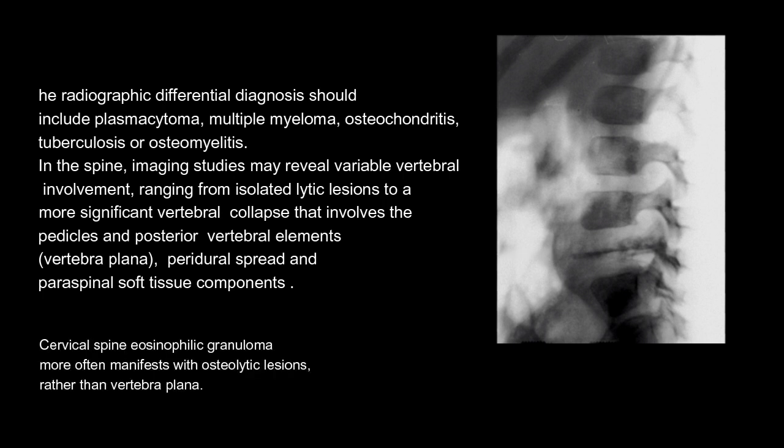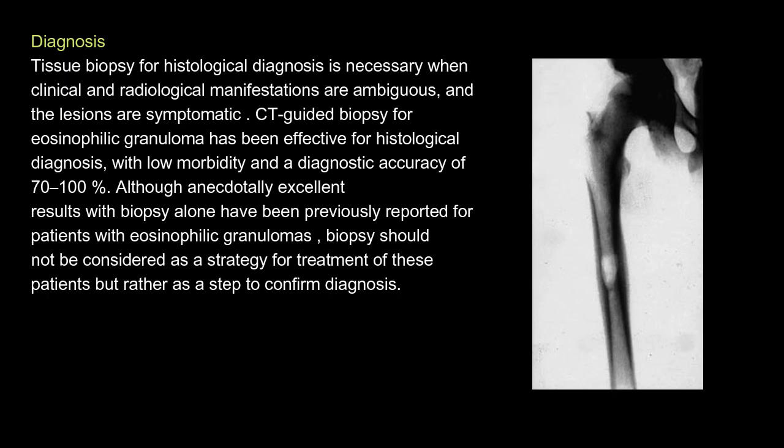Vertebra plana, peridural spread, and paraspinal soft tissue components may be seen. Cervical spine eosinophilic granuloma more often manifests with osteolytic lesions rather than vertebra plana. Diagnosis: tissue biopsy for histological diagnosis is necessary when clinical and radiological manifestations are ambiguous and the lesions are symptomatic.